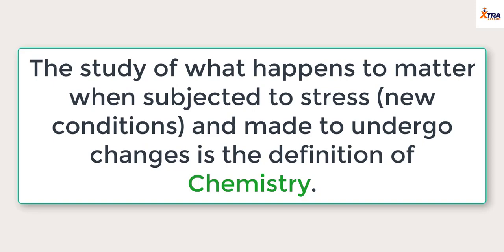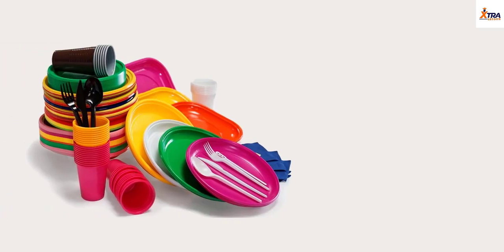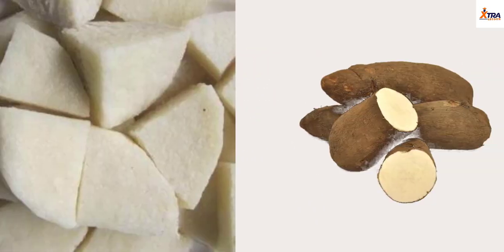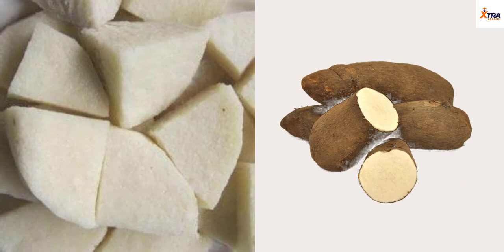Everything we use today has been produced from several raw materials under several conditions. Your plastics were produced from the polymerization of certain minute units called monomers — that is chemistry. The cooking of food, the conversion of food under the influence of heat and water to a new, more edible substance, is chemistry.